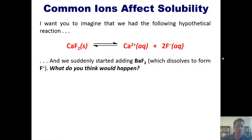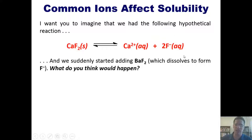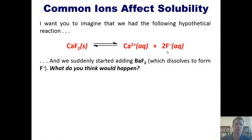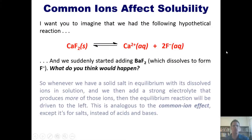Well, barium fluoride would dissociate and form a bunch more F⁻, increasing the concentration of F⁻ on the right. What would that do to the equilibrium? By Le Chatelier's principle, it would shift it to the left.